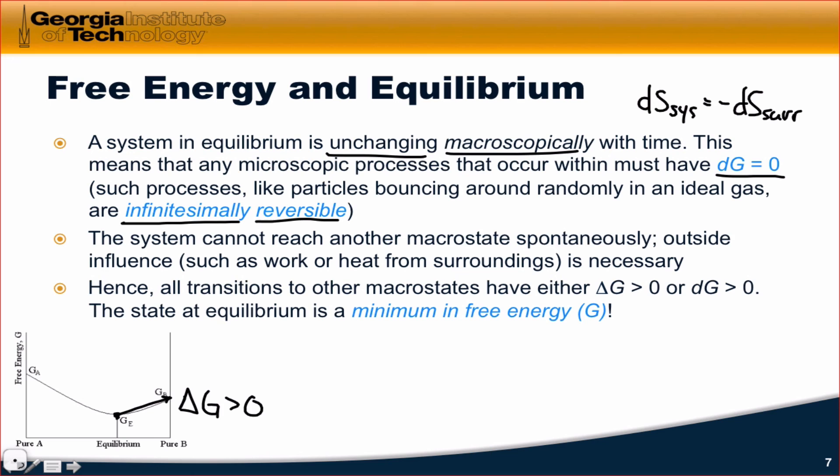This idea of the equilibrium state as a minimum in free energy is an important one to keep in mind and one we'll see again and again and again on diagrams that show the relationship between free energy and, for example, a chemical reaction or chemical elementary step, you'll see discrete species in valleys in free energy.